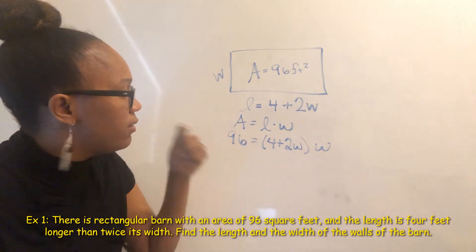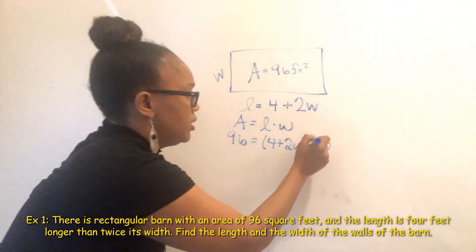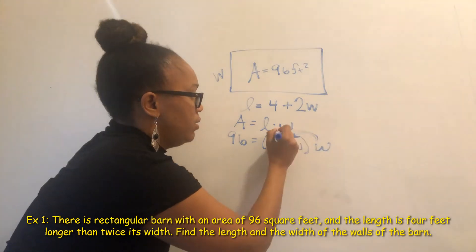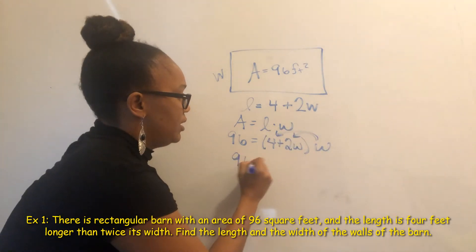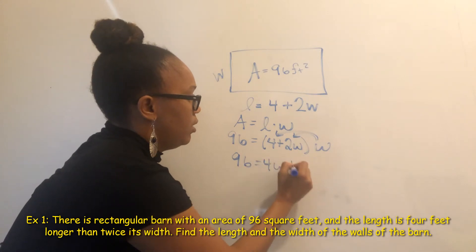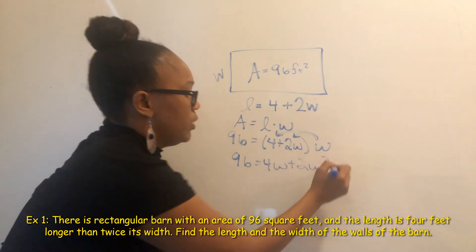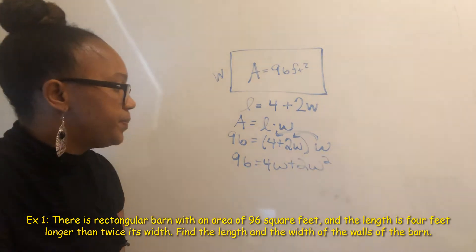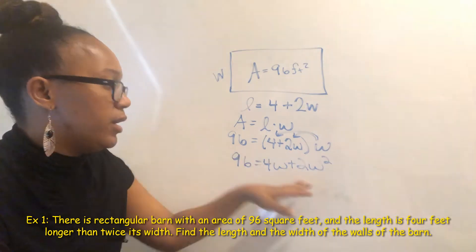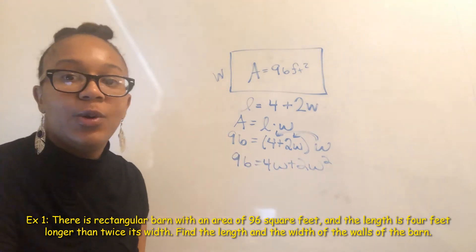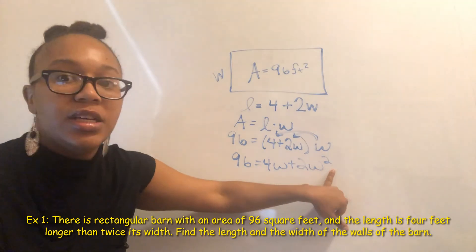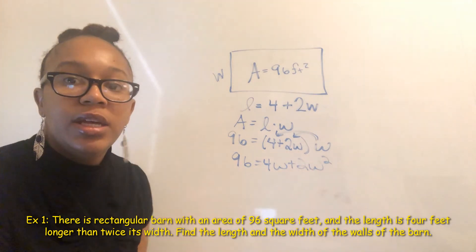We will solve this for W. We start by distributing the W, and we get 96 equal to four W plus two W squared. So we end up with a quadratic equation. How do we know it's quadratic? Because the highest exponent is two.